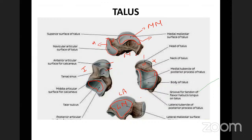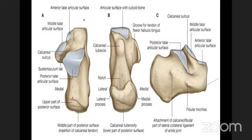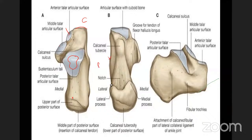The calcaneum, seen from above, articulates anteriorly with the cuboid and has facets — anterior talar facets — that articulate with the talus to form the talocalcaneonavicular joint and subtalar joint. On the plantar surface, there are three tubercles: one anterior and two posterior. Posteriorly, the middle third of the calcaneum is where the Achilles tendon (tendo Achillis) attaches.